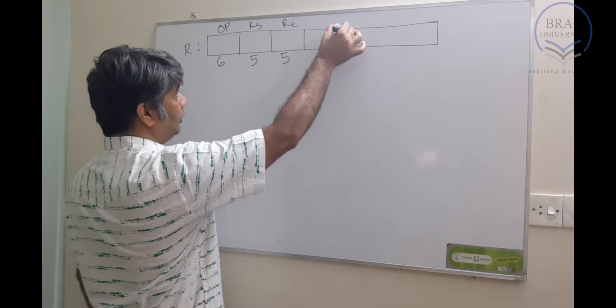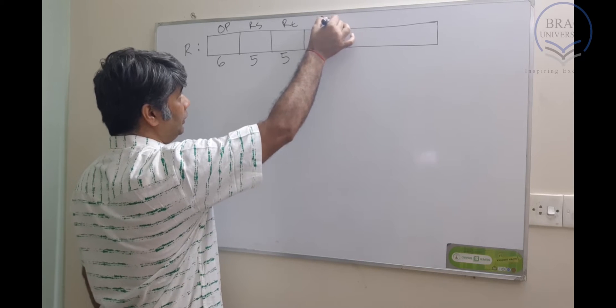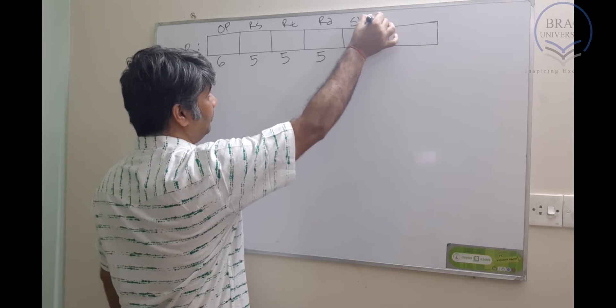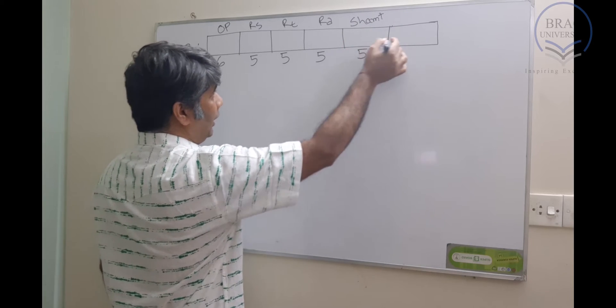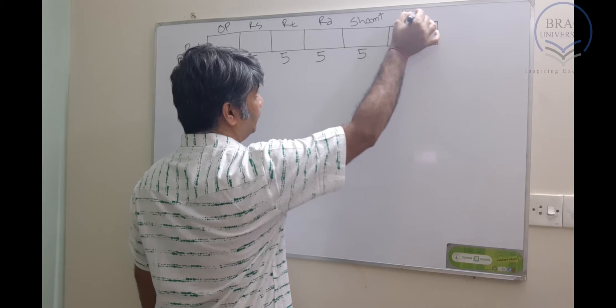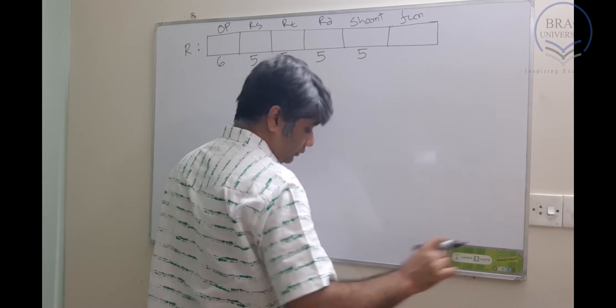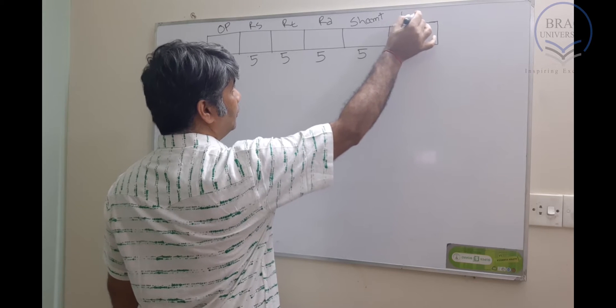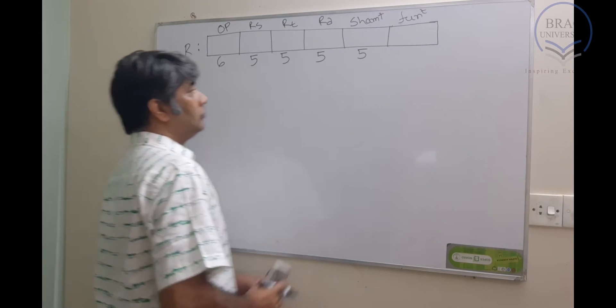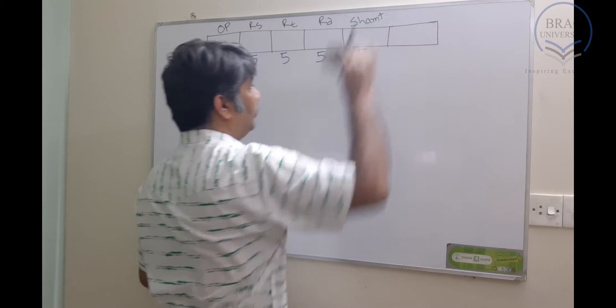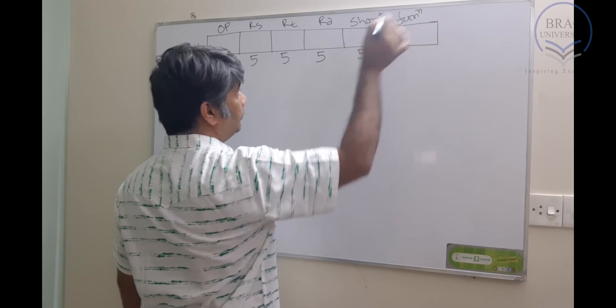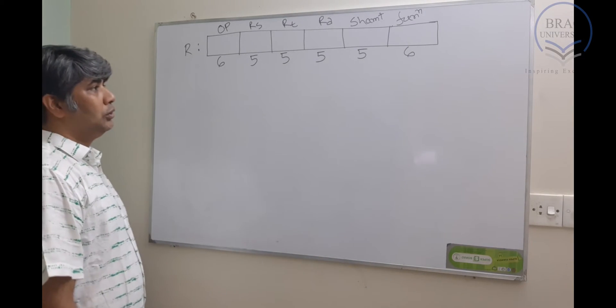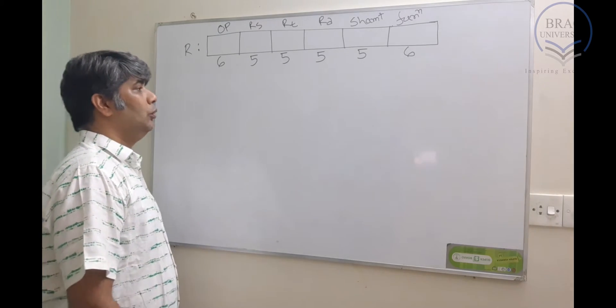Then we have rt, which is our second source, which is five bits. We have our destination which is rd, which is again five bits. We have the shifting field, shamt, which is five bits, and the last field is the function field, which is again six bits.